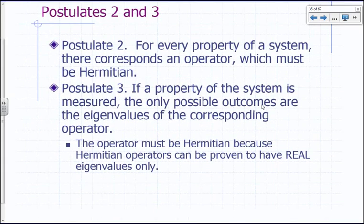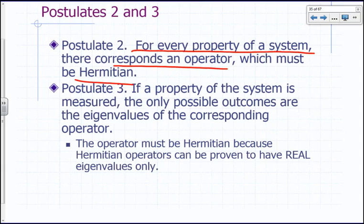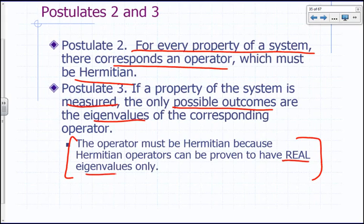Now let's go to Postulates 2 and 3: for every property of a system, there corresponds an operator which must be Hermitian. If the property is measured, the only possible outcomes are the eigenvalues of that operator. We want the operator to be Hermitian because we've proven that Hermitian operators have real eigenvalues, and measurement outcomes must be real.